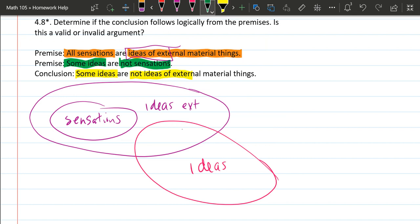Some ideas are not ideas of external material things. So they're asking, the conclusion is, does something necessarily exist outside? An idea exist that's not an idea of external material things.